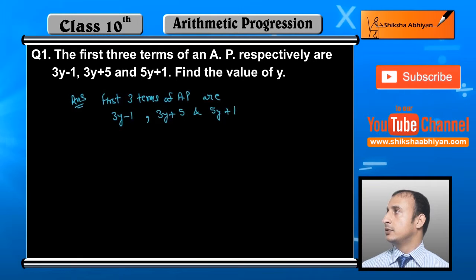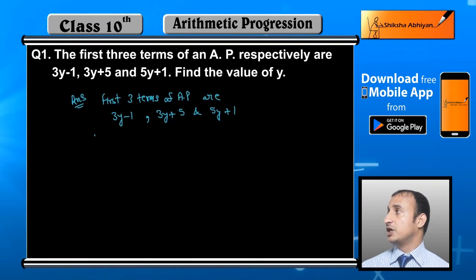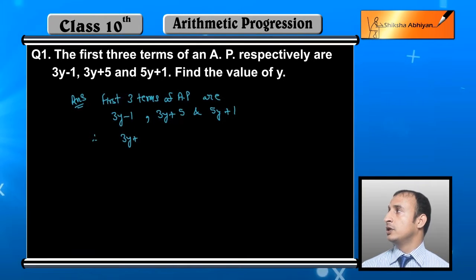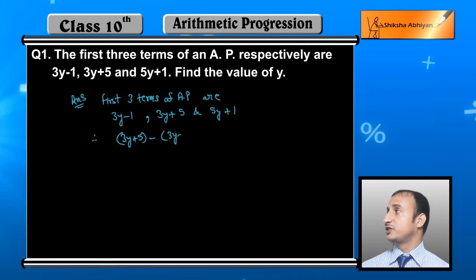Their common difference will be the same in arithmetic progression. Therefore, 3y+5 minus 3y-1, that is second term minus first term gives common difference. And third term minus second term also gives common difference.